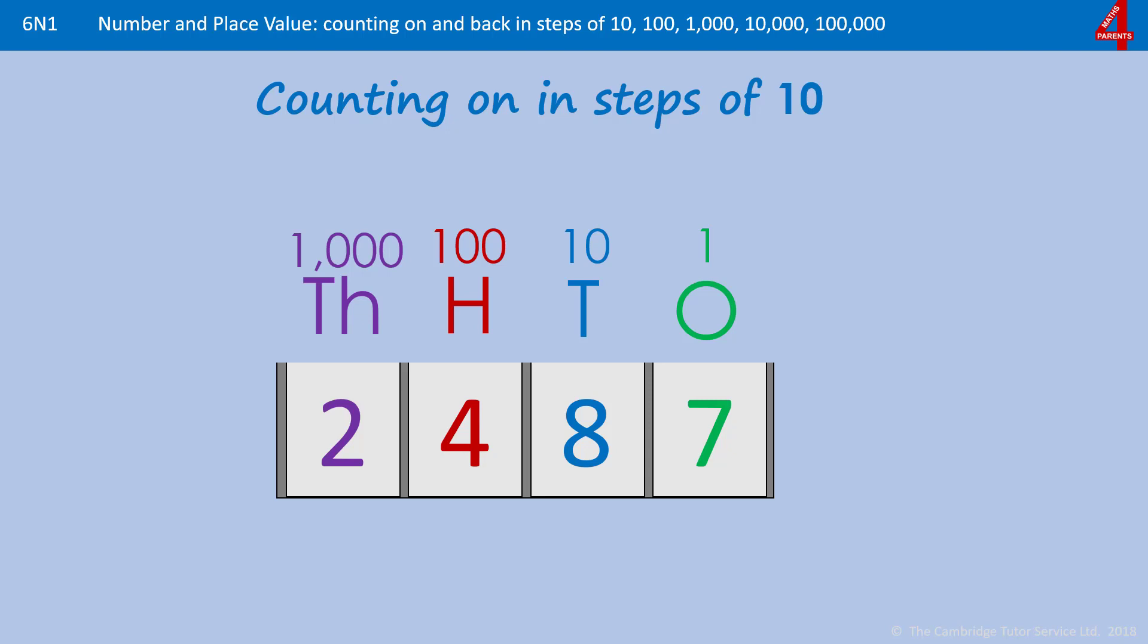We have a number here 2487 and you can see that there are two in the thousands column, four in the hundreds, eight in the tens and seven in the ones or units.